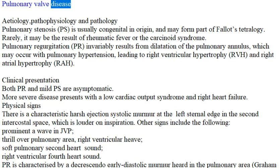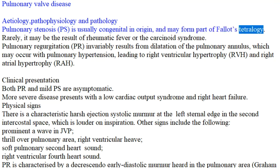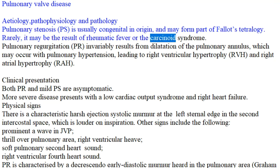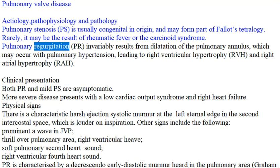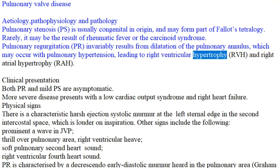Pulmonary valve disease: etiology, pathophysiology and pathology. Pulmonary stenosis (PS) is usually congenital in origin and may form part of Fallot's tetralogy. Rarely, it may be the result of rheumatic fever or the carcinoid syndrome. Pulmonary regurgitation (PR) invariably results from dilatation of the pulmonary annulus, which may occur with pulmonary hypertension, leading to right ventricular hypertrophy (RVH) and right atrial hypertrophy (RAH).